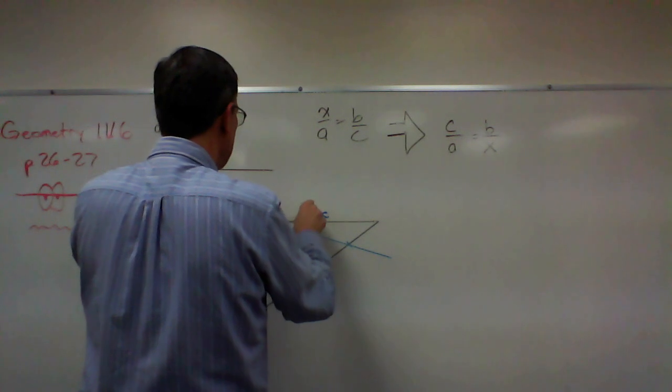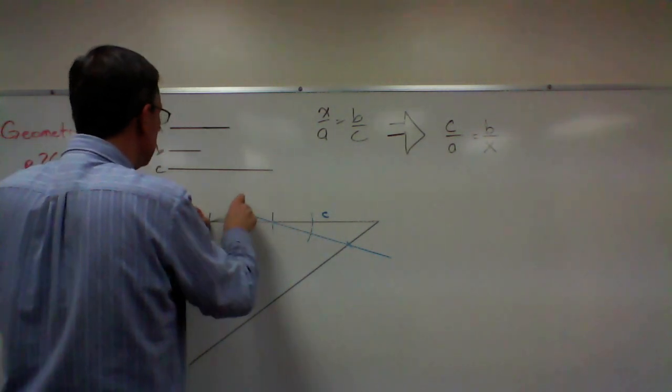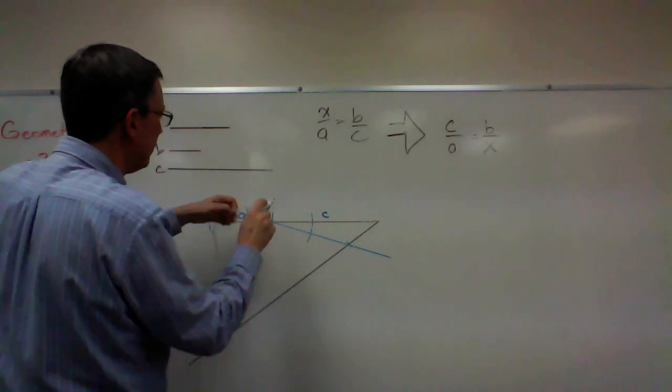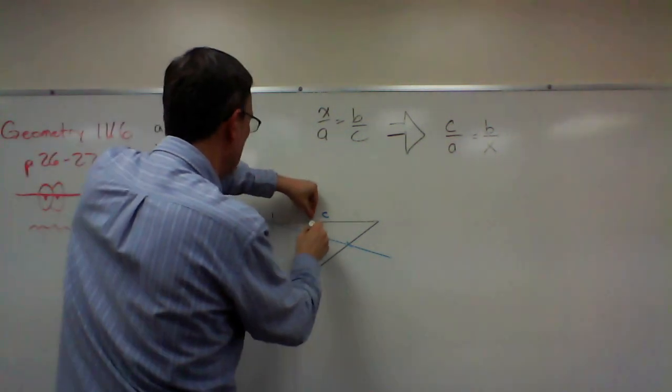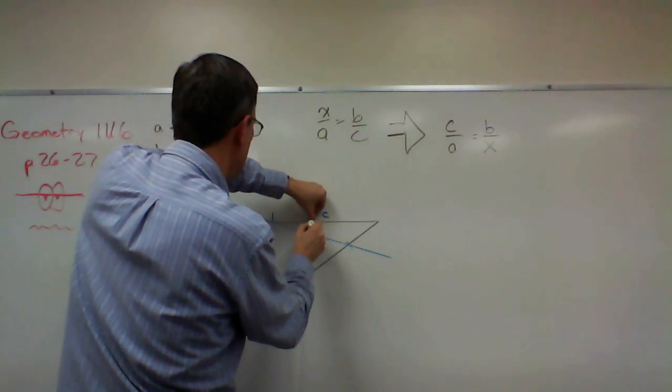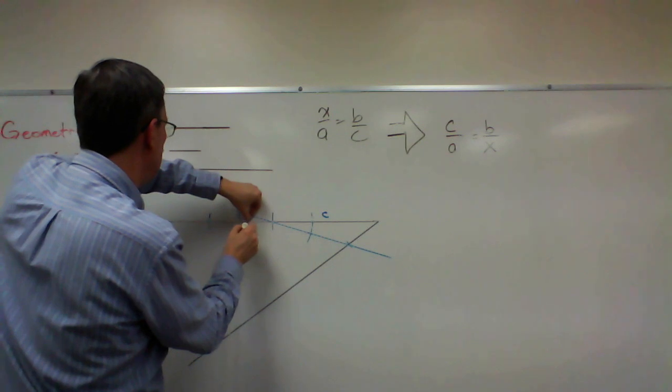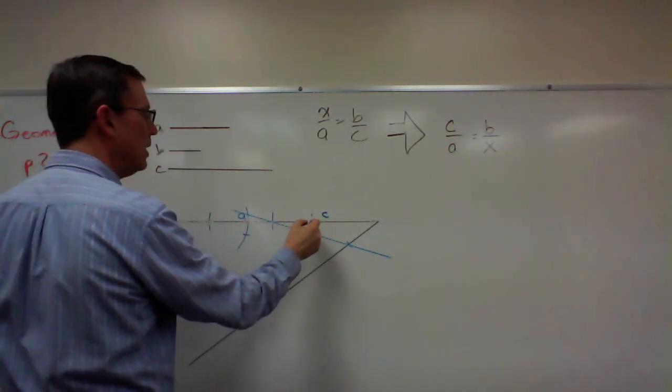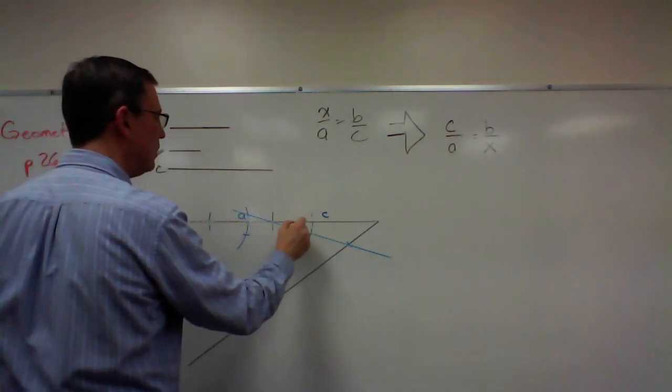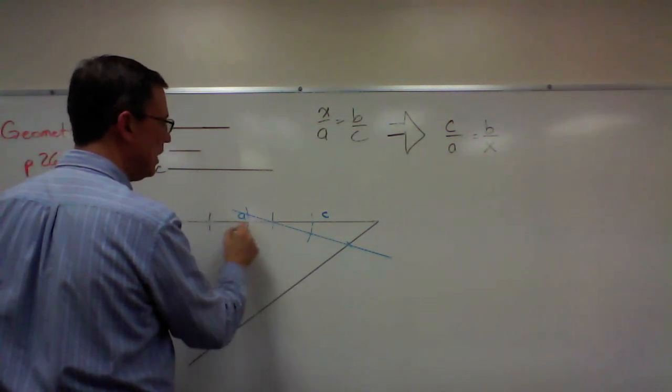So I'm going to start here and sweep an arc like that. Come to this point, sweep an arc. Then go back and go from here to here, and then from here to here. Okay. So this angle here I want to have equal to this angle here. Can you see that?